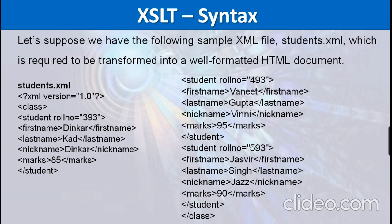Now let's understand the XSLT syntax. Here we have a simple XML file called student.xml. In this file the root element is 'class'. The class element opens and closes, and in between we have a child element called 'student', which has some attributes and their values. It also contains elements like first name, last name, nickname, and marks, along with other details.